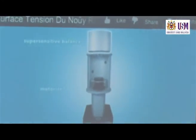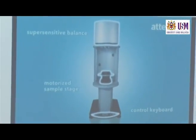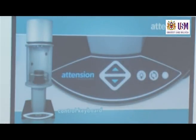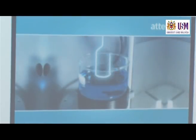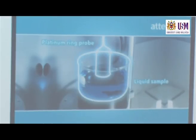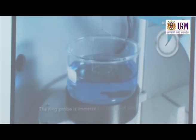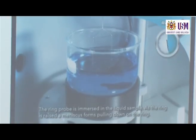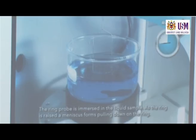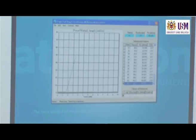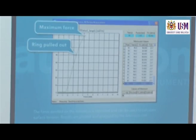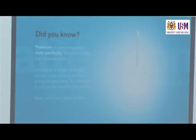The instrument is called a tensiometer. A platinum ring probe hung on the balance is used to measure the surface tension of the liquid positioned on the sample stage. The ring probe is immersed in the liquid, pulling down on the ring. The force exerted on the meniscus is recorded and used to calculate surface tension. The results are plotted and analyzed by the software. Any shape of probe can be used as long as it has regular geometry — for instance, a rod can be used for low volume, or a plate probe.